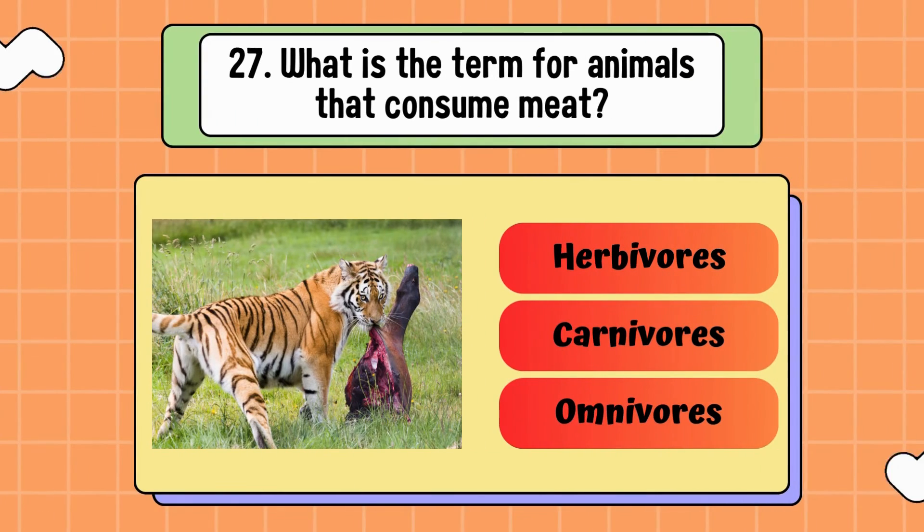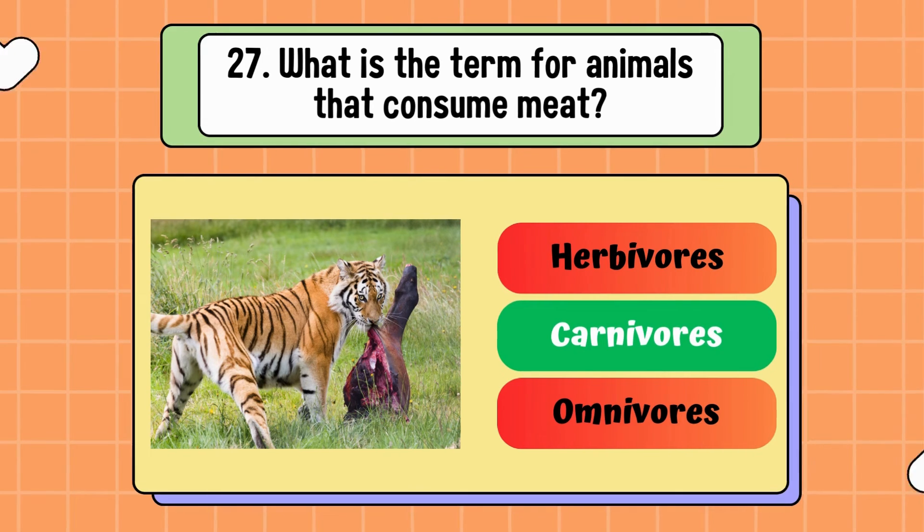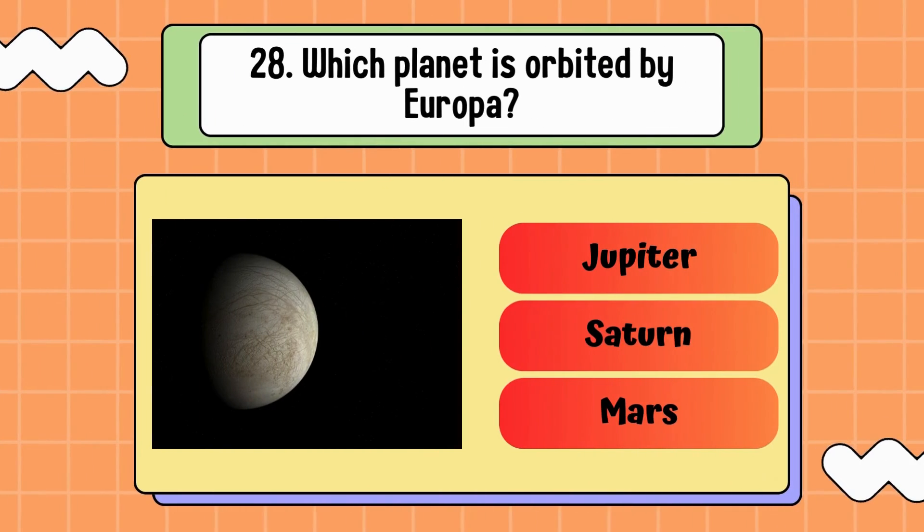What is the term for animals that consume meat? Herbivores, carnivores, or omnivores? Answer is carnivores. Which planet is orbited by Europa? Jupiter, Saturn, or Mars? Answer is Jupiter.